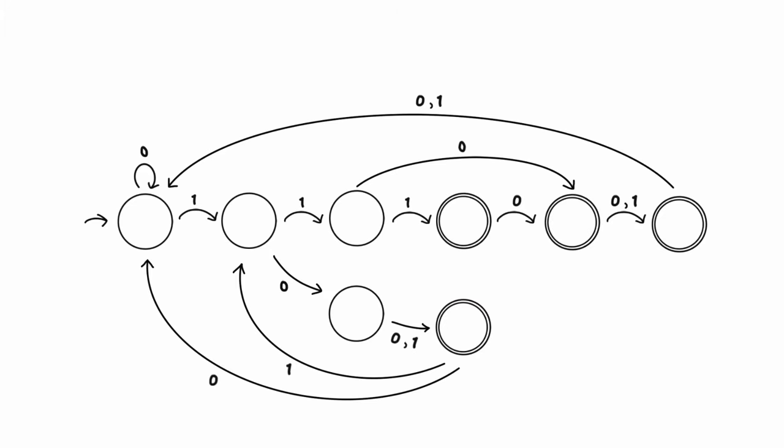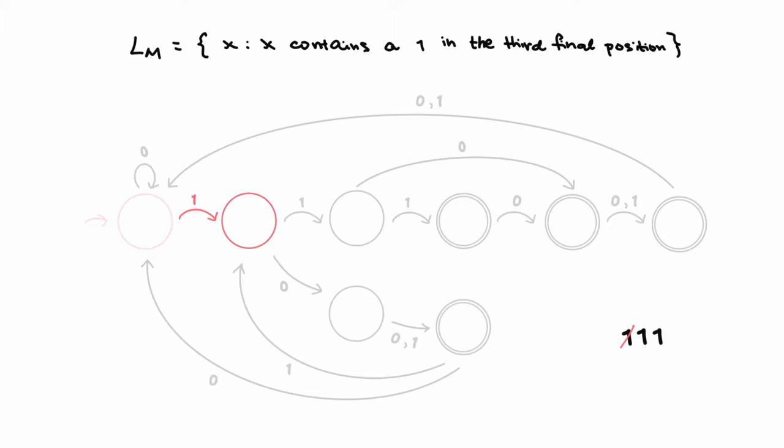For example, this is a DFA, which we will call M, that accepts any string that contains a 1 in the third position from the end. So it accepts 111, and it also accepts 1100, but it rejects 1000 and 1011.